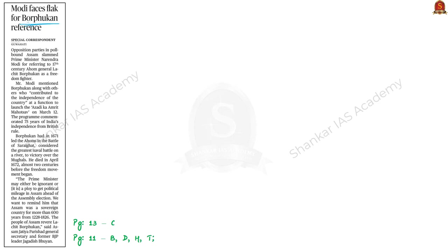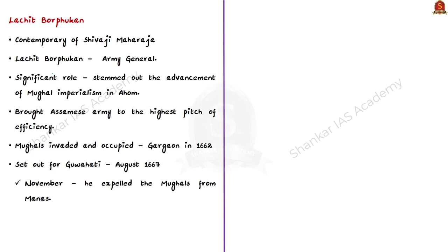The next article talks about Lachit Borphukan. The news mentions criticism by opposition parties against the Prime Minister of India. The Prime Minister was at the launching function of Azadi Ka Amrit Mahotsav — a program to commemorate 75 years of India's independence — and he mentioned Borphukan along with those who contributed to the country's independence. Opposition parties slammed the Prime Minister for referring to the 17th century Ahom General Lachit Borphukan as a freedom fighter. Let us see about Lachit Borphukan and the famous Battle of Sarai Ghat.